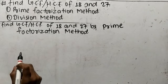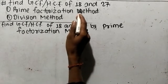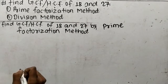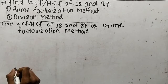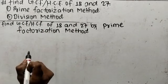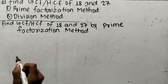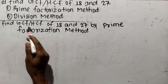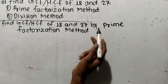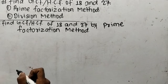Today in this video we shall learn to find GCF or HCF of 18 and 27. We shall find GCF or HCF by two methods: first by prime factorization method, and second by division method. So let's find out GCF or HCF of 18 and 27 by prime factorization method.